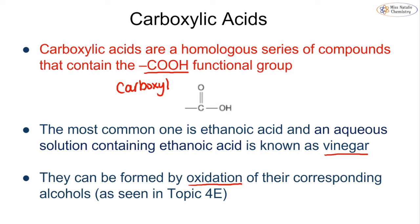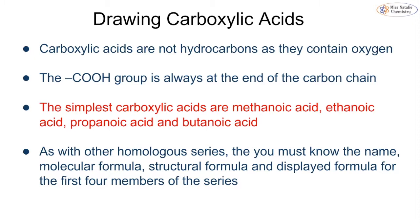We can form carboxylic acids by oxidizing their corresponding alcohols. We covered that in topic 4E, where we looked at using acidified potassium dichromate as an oxidizing agent to go from something like ethanol to ethanoic acid — and that's our oxidation. If you can't quite remember that, you might want to have a look back at topic 4E.